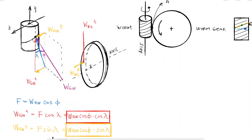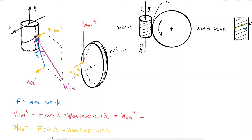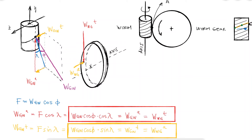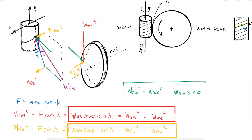These two expressions allow us to calculate the axial and tangential components of the interaction force. The axial component of the force from the gear to the worm is the tangential component of the force from the worm to the gear, and vice versa. The radial component is radial for both the worm and the worm gear, and is simply the sine component of the overall force using the pressure angle phi.